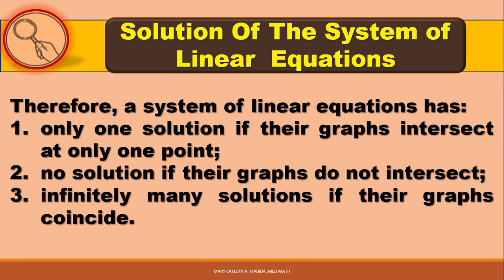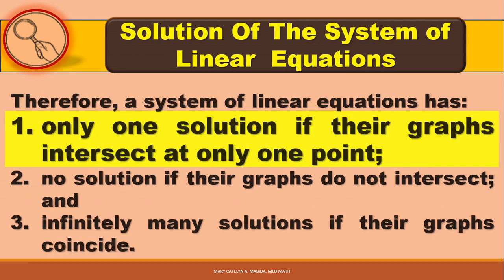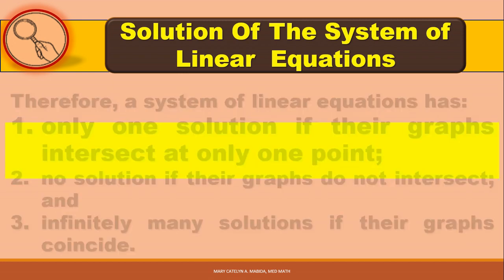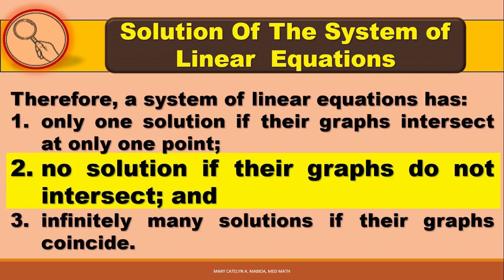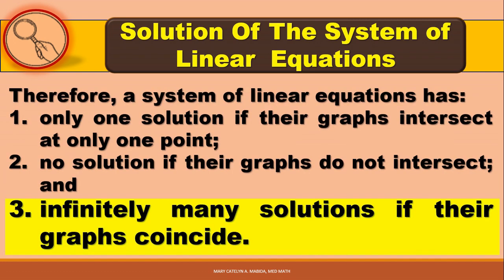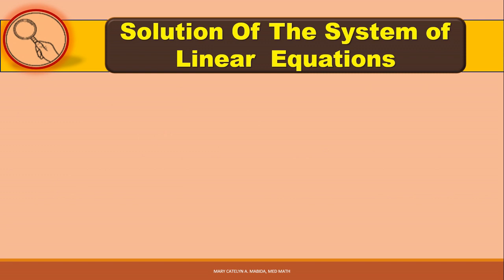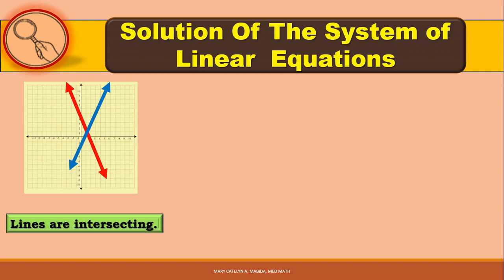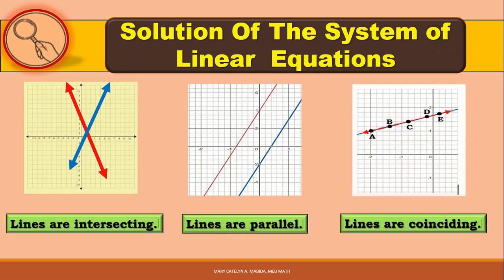A system of linear equations has only one solution if their graphs intersect at one point, no solution if their graphs do not intersect, and infinitely many solutions if their graphs coincide. Now that we know the three cases — intersecting lines, parallel lines, and coinciding lines — let's determine the solutions of systems of linear equations.